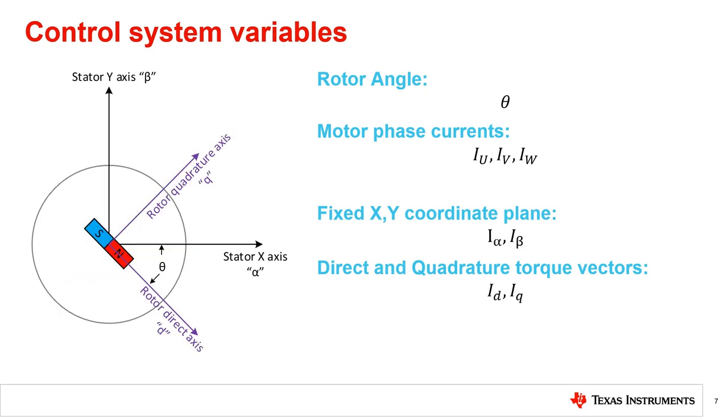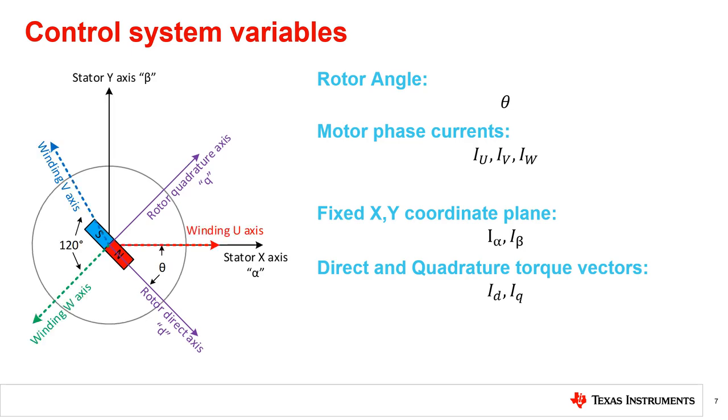Lastly, we have the direct and quadrature vectors for our torque components and note the rotor angle theta that separates the rotor and stator positions. The direct component is in line with the rotor, and the quadrature component is 90 degrees perpendicular instead. Combining these coordinate systems in one results in this diagram, which relates all the variables.